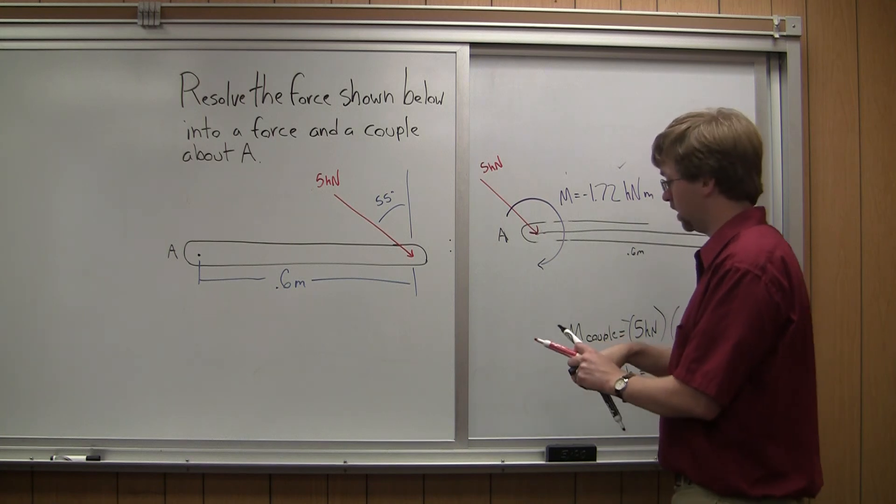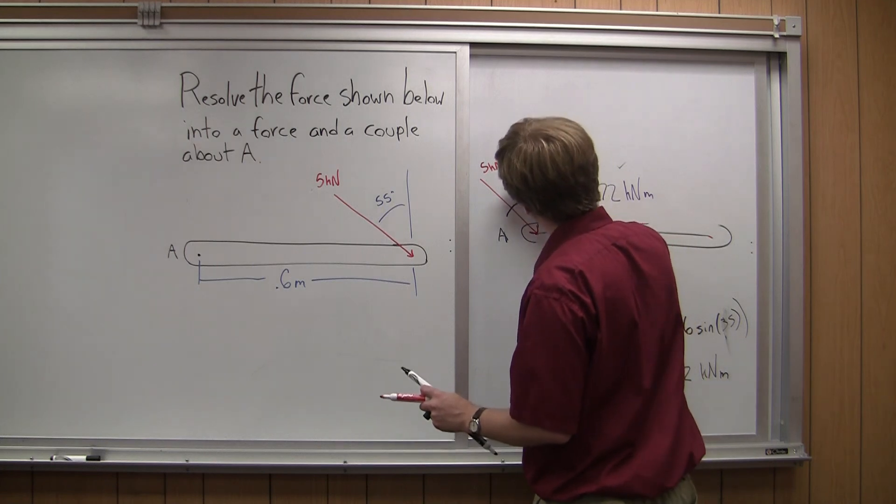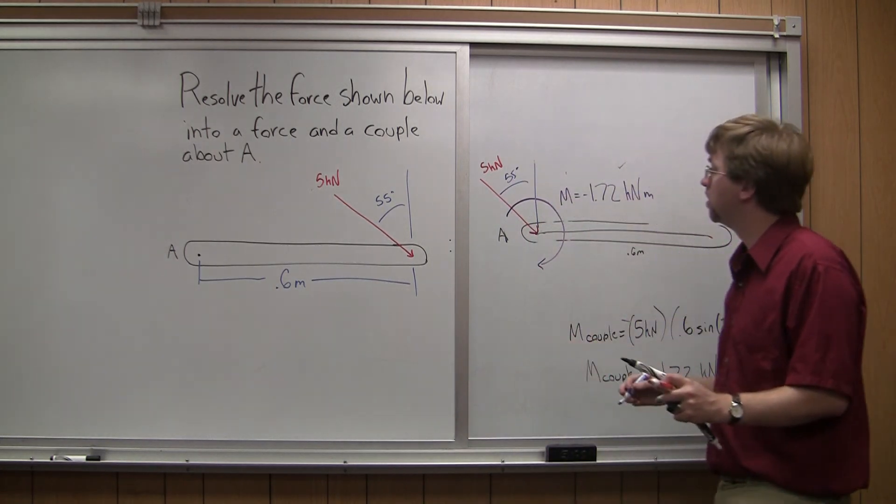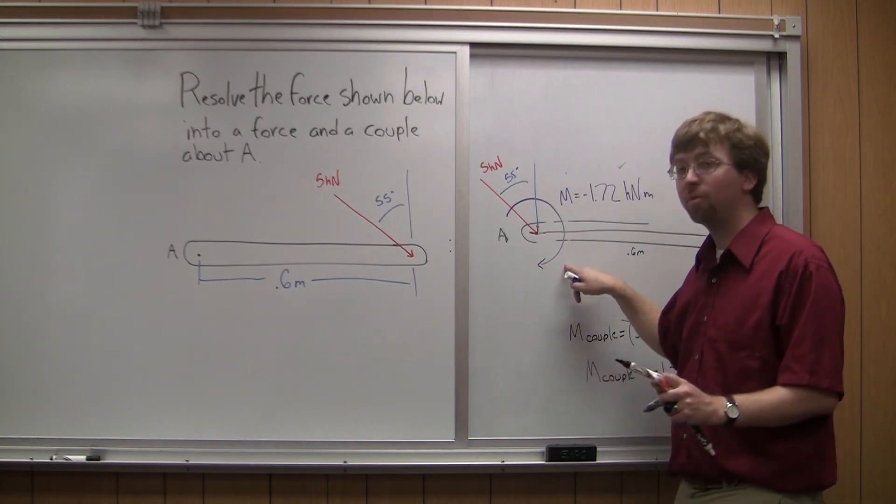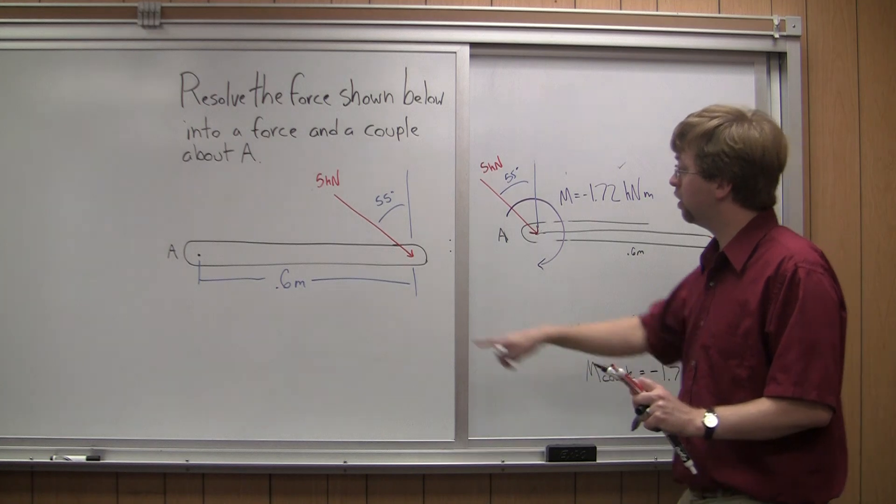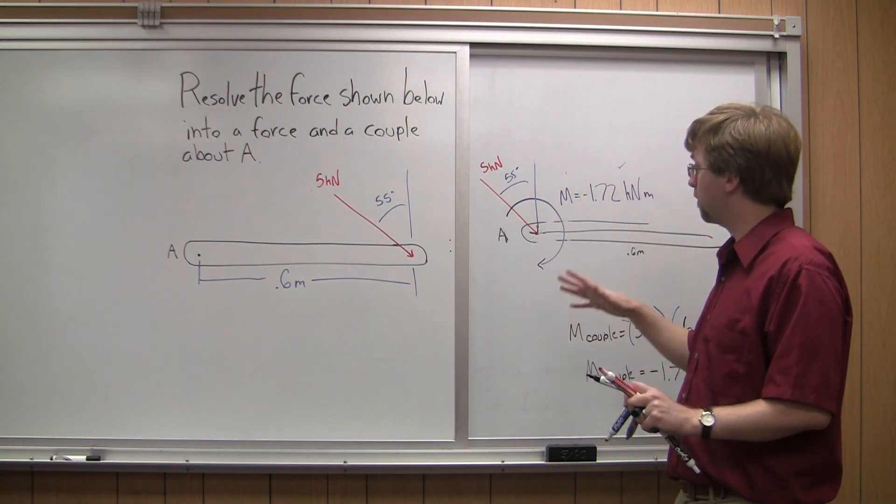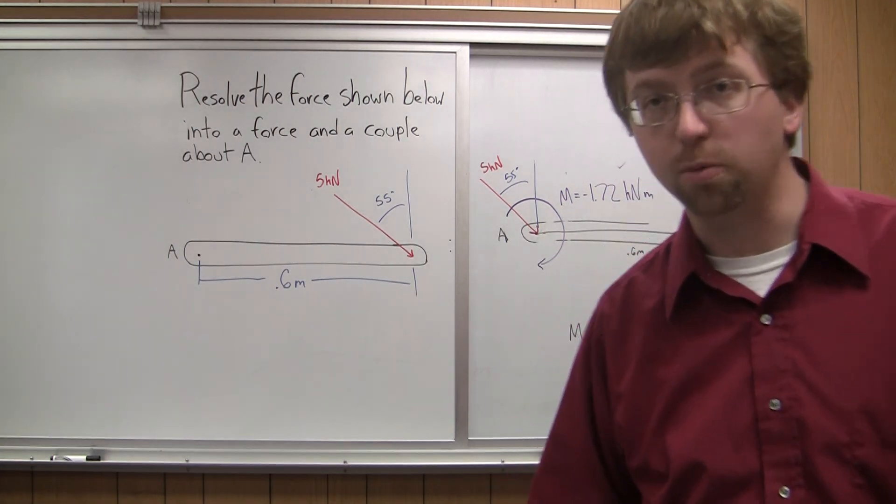And I can finally draw in the direction again. Since this one is going in the same direction, it's going to be 55 degrees from vertical. So with that, I'm left with a single force and a single moment that are equivalent to my original scenario. Now I've resolved my force into a force and a couple about point A. Thank you for watching, and I hope to see you again.